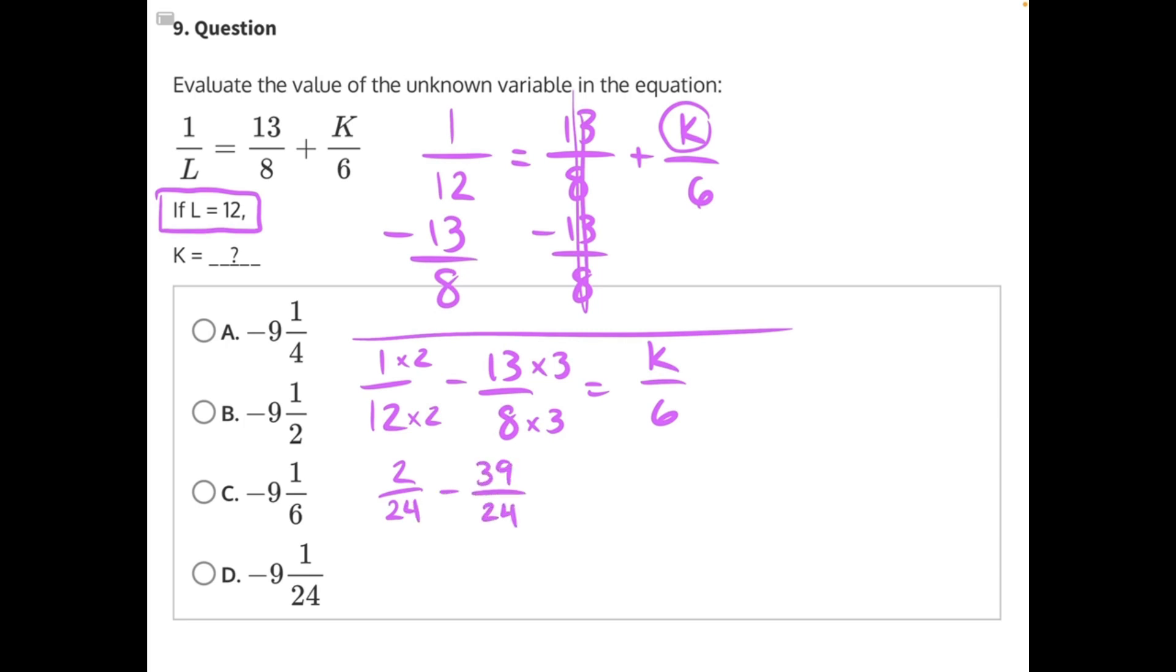Now we can subtract. 2 minus 39 would give us negative 37 over 24, and that all equals K over 6.